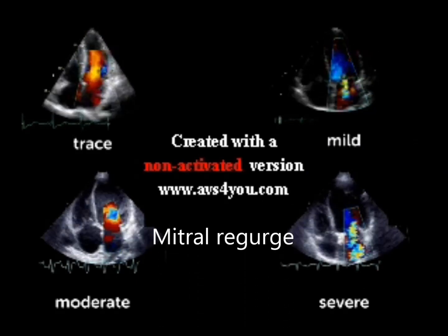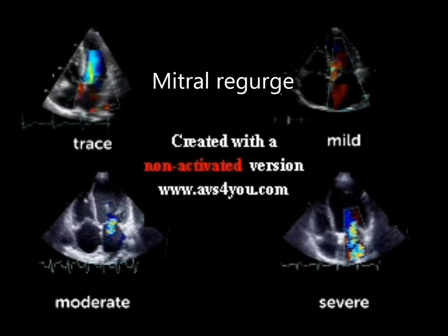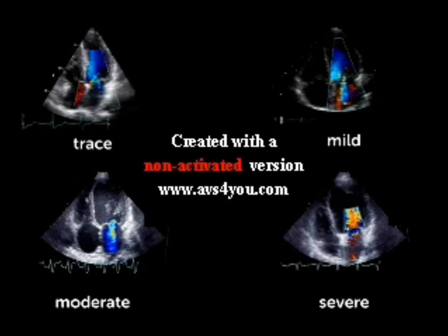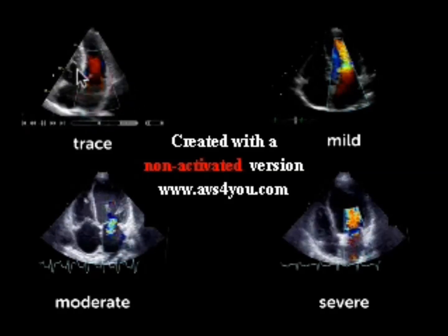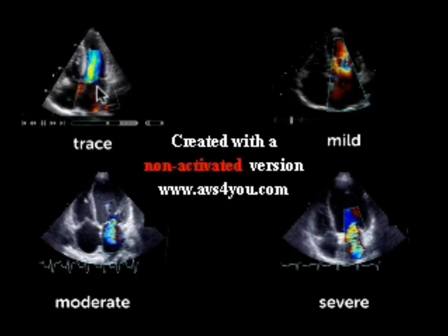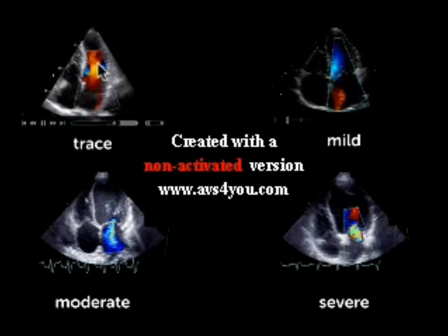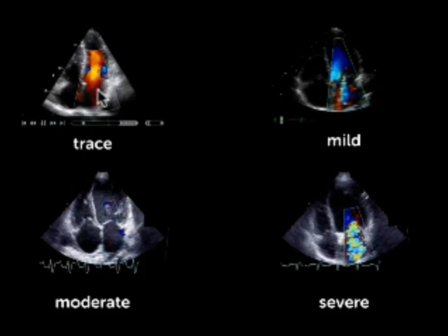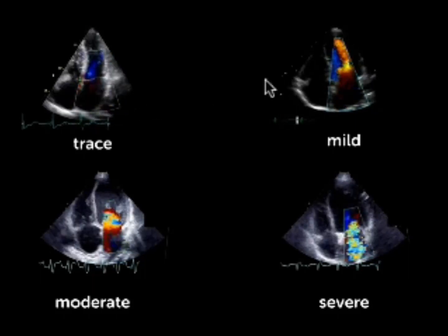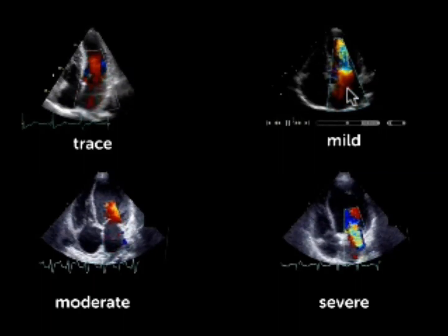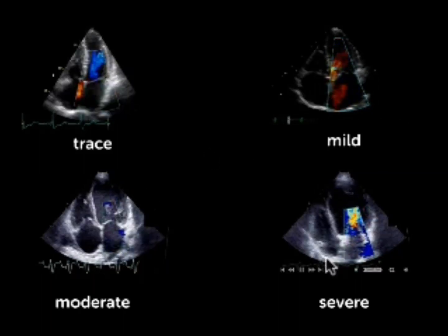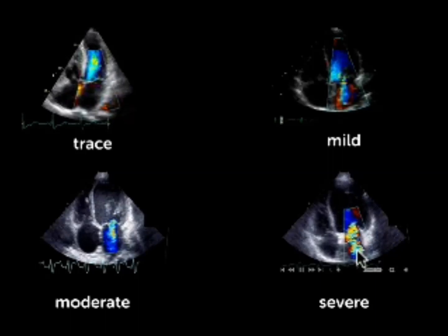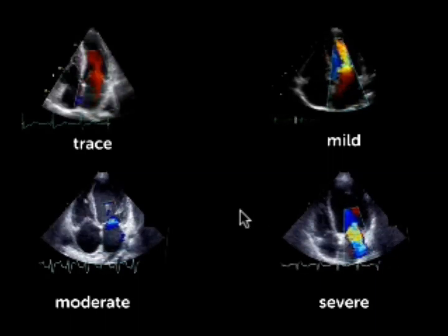To quantify mitral regurgitation, the size of the jet plays a role. Here are four examples showing four different degrees of mitral regurgitation. The jet must be blue because mitral regurgitation flows towards the left atrium — away from the transducer. The first example shows just a very small blue flame; it gets progressively larger in the subsequent examples, with the last showing a very large jet with mosaic colors indicating high velocity, which is typical for mitral regurgitation.